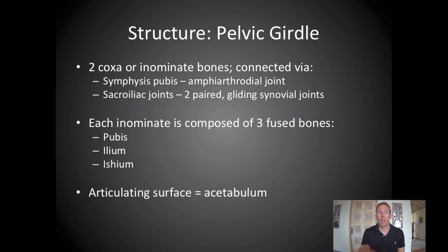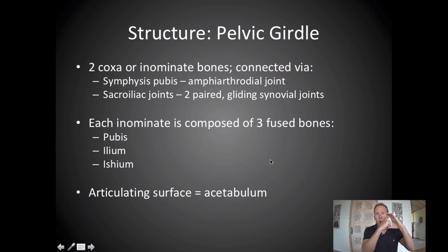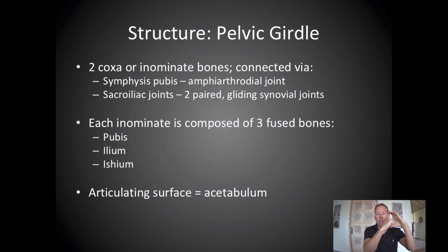When we look at the hip joint, you have two bones coming together. On the pelvic side, the socket of the hip is called the acetabulum, which is part of the pelvis. Every joint has a concave and a convex portion — the hip, like the shoulder, is a ball and socket. The concave portion is the acetabulum, which is part of the pelvis, and the convex side is the femoral head. We'll look more at the orientation and structure of the acetabulum.